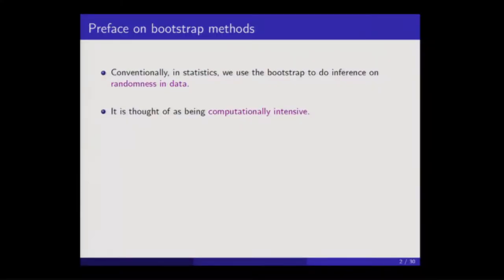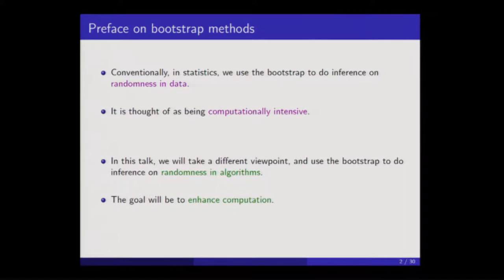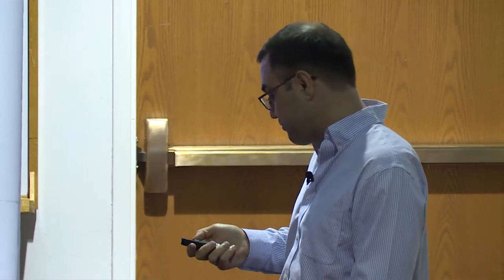Ordinarily in statistics, we think of the bootstrap as a general approach to do inference on randomness in data, and it's ordinarily thought of as being something that's computationally intensive. In fact, sometimes computationally intensive methods are used synonymously with bootstrap methods. By contrast here, I want to use the bootstrap to do inference on randomness in an algorithm. I'll treat the input to the algorithm as fixed. And also, I will want to use the bootstrap to enhance computation. So it's almost reversing the conventional way of thinking about bootstrap methods.